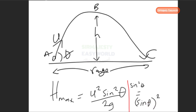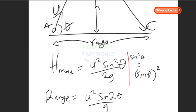For the maximum height in Scenario 2, the formula is H = U²sin²θ / 2g, where U is the initial velocity, theta is the angle of projection, and g is gravity at 9.8 m/s². Note that sin²θ is the same as (sinθ)², i.e., sine theta all squared.